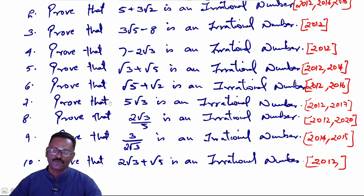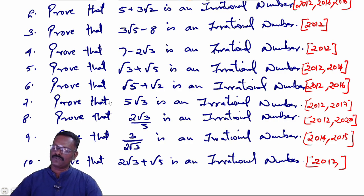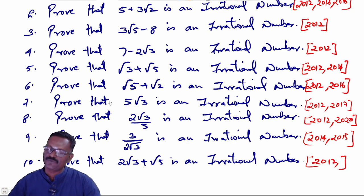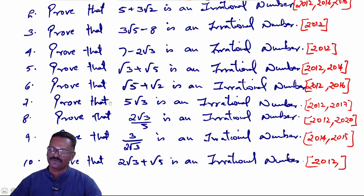Next question: Prove that 7 − 2√3 is an irrational number, which appeared in 2012. Next question: Prove that √3 + √5 is an irrational number, which appeared in 2012 and 2014. Next question: Prove that √5 + √2 is an irrational number, which appeared in 2012 and 2016.